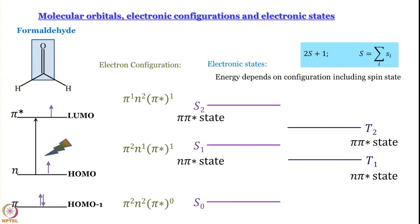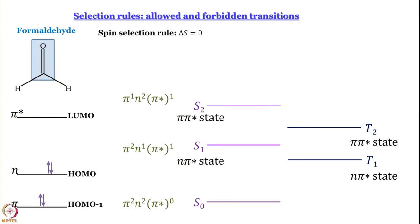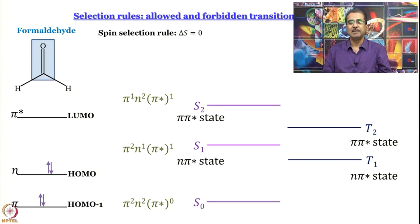An important point is that the energy gap between S0 and S1 is quite large — on the order of electron volts. Using Boltzmann distribution, you will find that S1, S2, and other excited states are not going to be populated at room temperature — only S0 will be populated. So S1, S2, T1, T2 can only get populated if you shine light on them or use some other sophisticated technique.